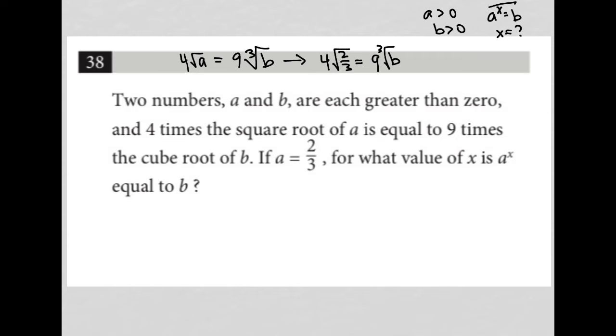So, in order to figure this out, I have to find out what B is. I can use this to figure out what B is. I'm going to start off by multiplying by one-ninth. So, I'd have four-ninths times the square root of two-thirds equals the cube root of B, right? Because this nine will cross out with that nine over there.